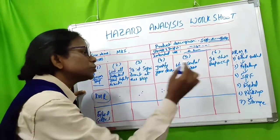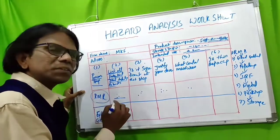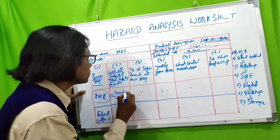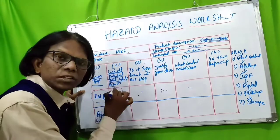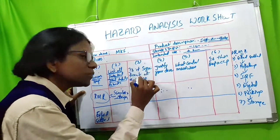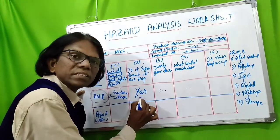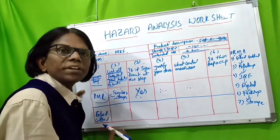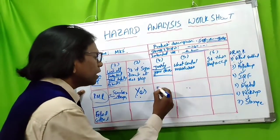For IQF frozen tuna fillets at the raw material receiving stage, the chemical food safety hazard is scombrotoxin formation. Scombrotoxin is listed as a potential food safety hazard at raw material receiving. It is determined to be a significant hazard, based on the FDA hazard control guide and scientific publications.